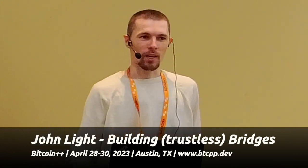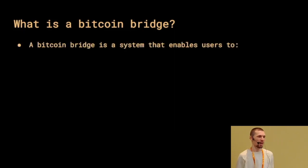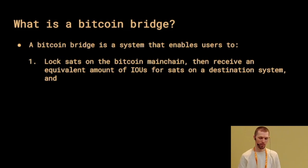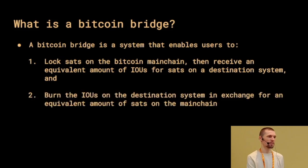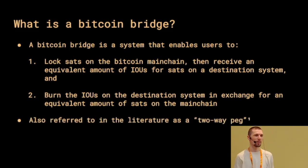This talk will describe one way that we can build a trustless bridge. A Bitcoin bridge is a system that enables users to lock sats on the Bitcoin mainchain and then receive an equivalent amount of IOUs for sats on some destination system. And then, perhaps most importantly, it enables the user to burn the IOUs on the destination system in exchange for an equivalent amount of sats on the mainchain. This is also referred to in the literature as a two-way peg, but nowadays most people call these bridges.